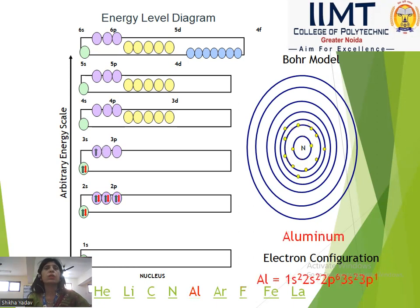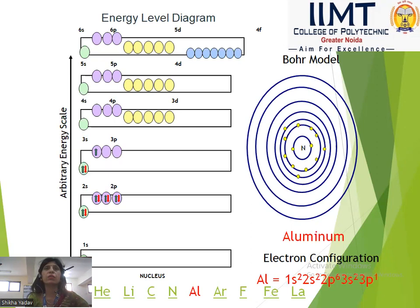Next is aluminum with atomic number 13. Its configuration is 1s², 2s², 2p⁶, 3s², 3p¹. Looking at the diagram: in the first shell we have 2 electrons, in the second shell we have 8 electrons, and in the third shell we have 3 electrons.